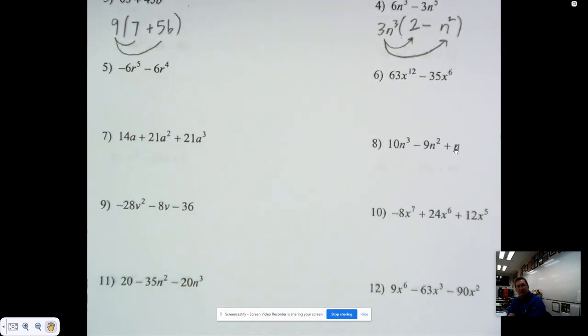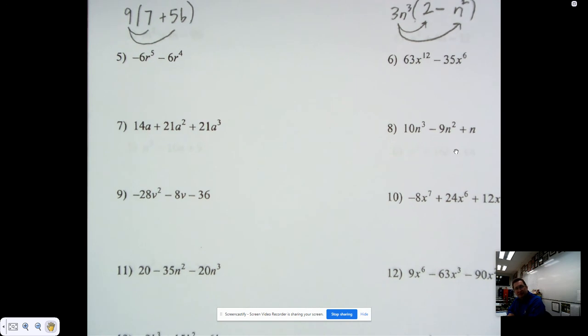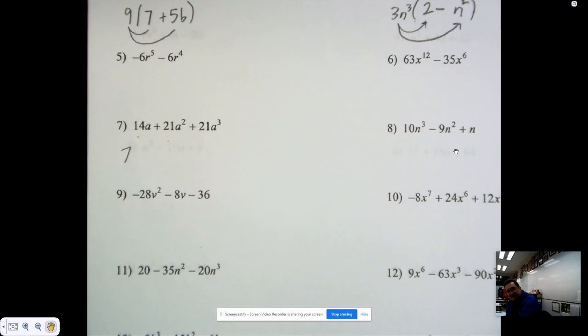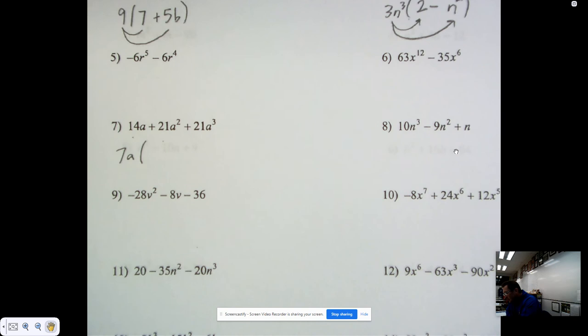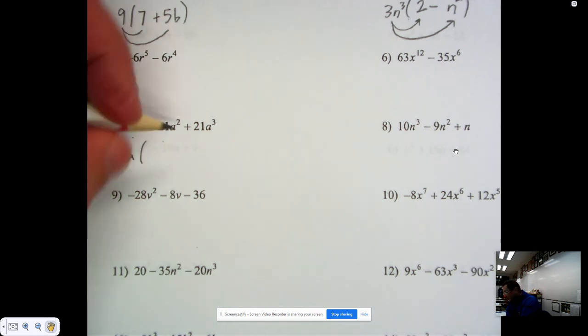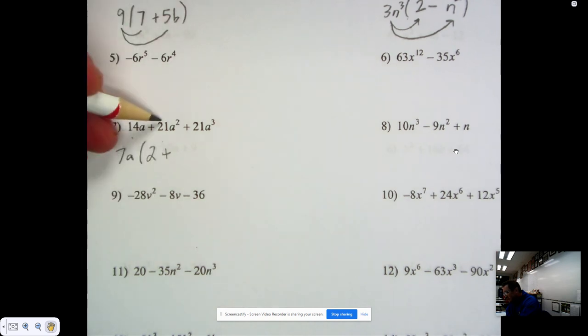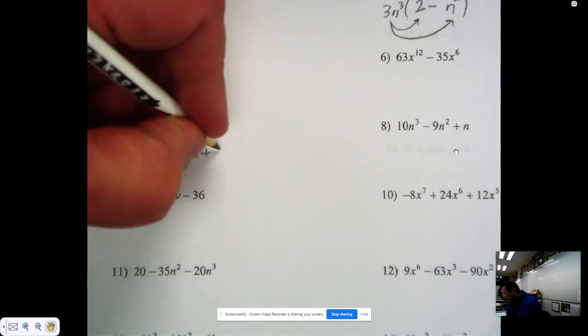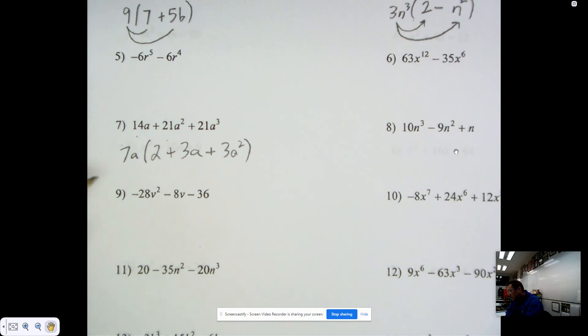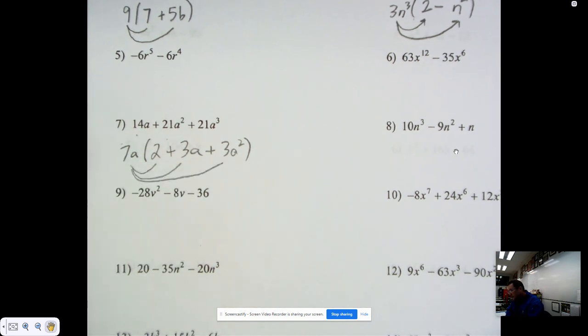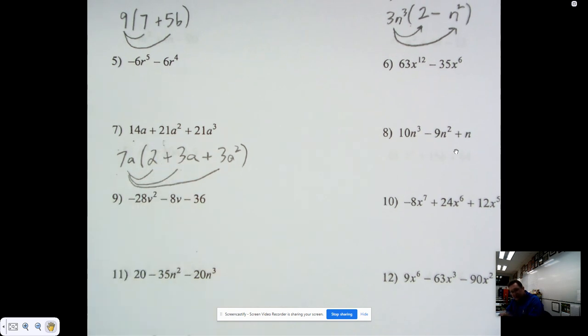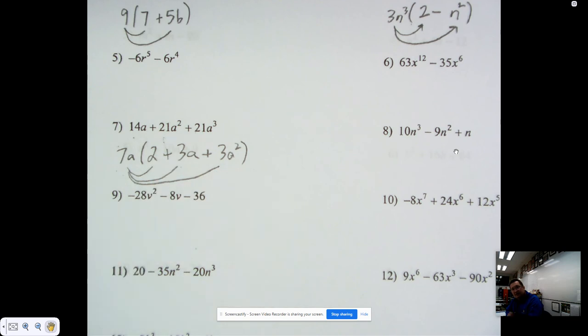Now, if we get ones that have three terms, such as the one down here, there's no need to worry. We just ask the same question. What's the largest number that goes into 14 and 21 and 21? In that case, that's 7. Then the smallest exponent of the a's we see is a to the 1st, so we'll pull out just an a. Then we'll say: 7a times what is 14a? The answer is 2. 7a times what is 21a squared? That would be 3a. Again, we could multiply this out and see that we're getting what we started with. 7a times 2 is 14a. 7a times 3a is 21a squared. And 7a times 3a squared is 21a cubed.